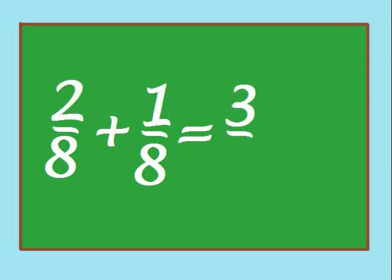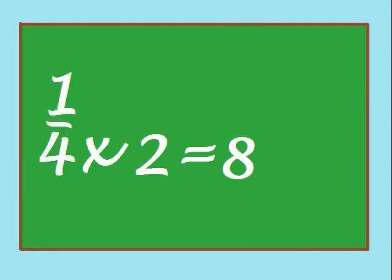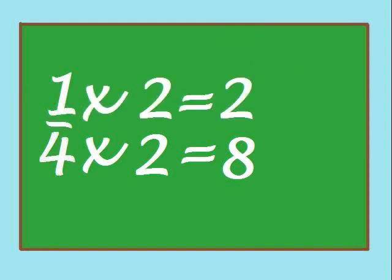Remember, numerator plus numerator and bring the denominator over. Your answer will simply be three-eighths. Now you may be thinking that it will get more difficult as the numbers get bigger, but it doesn't. The process is still the same. Whatever you do to the denominator, you have to do to the numerator.